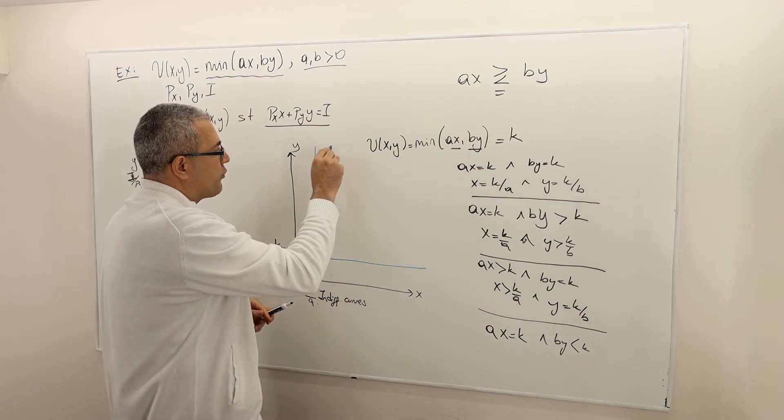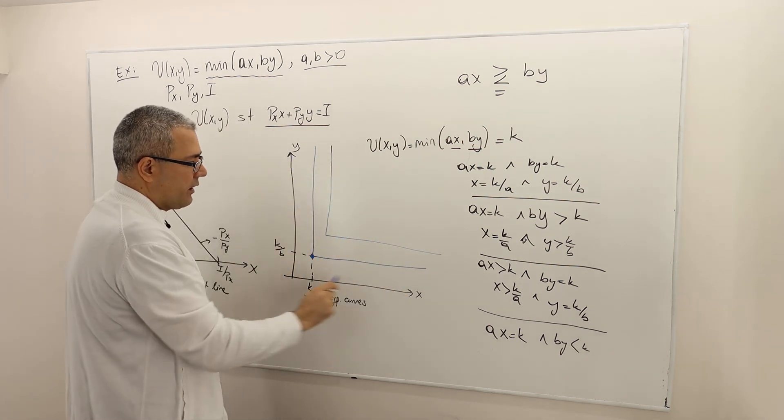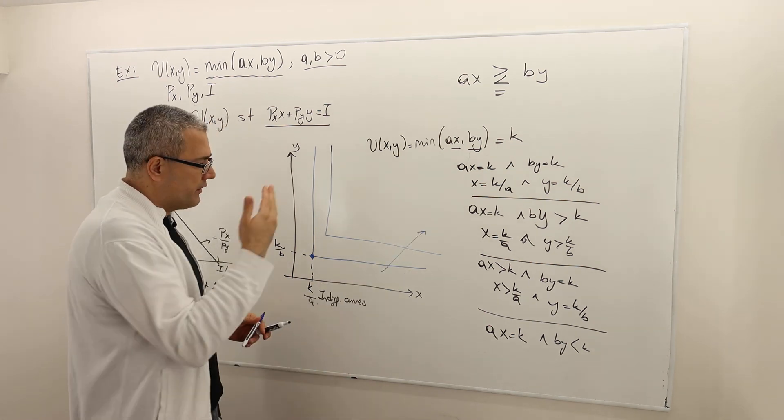If you increase K to K prime, this is what you're going to get. If you decrease, you're going to get a lower indifference curve. So as we move in this direction, the utility is increasing.